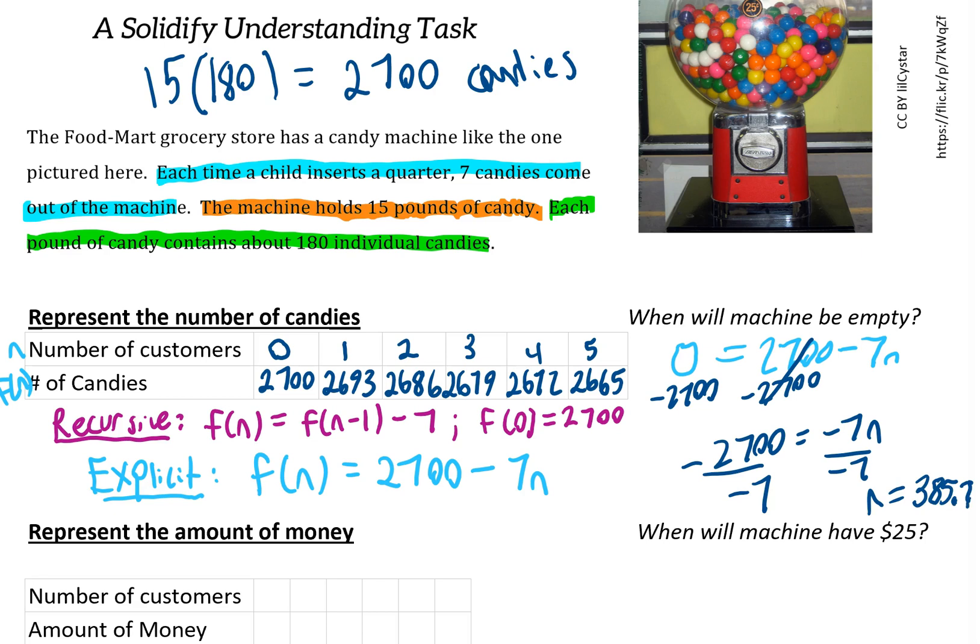The 386th customer is going to get ripped off a little bit because there won't be enough candy for them to get seven. It makes the most sense to say the machine will be empty after 386 customers, even though that last one doesn't get their full amount.